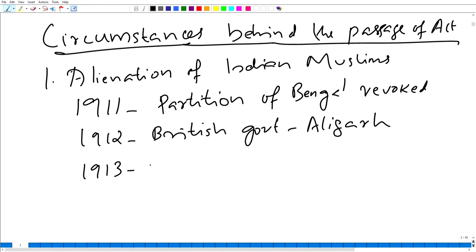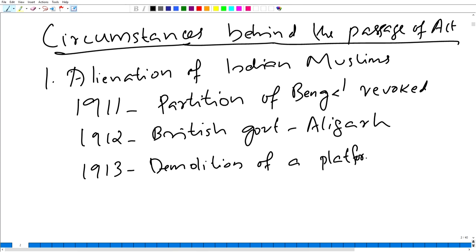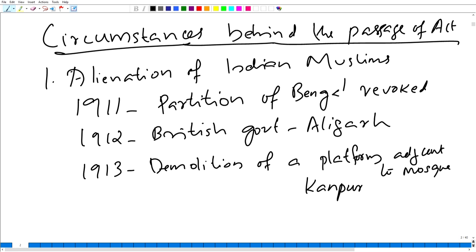In 1913, there was the demolition of a platform adjacent to a mosque. The British demolished a platform adjacent to a mosque at Kanpur, which also brought a reaction from the Muslims against the British administration in India.